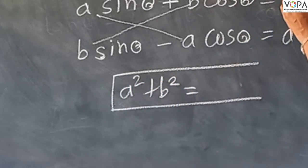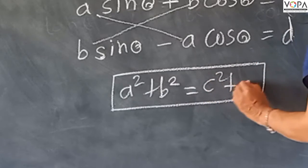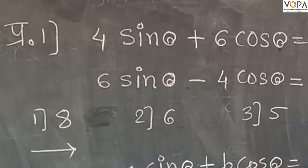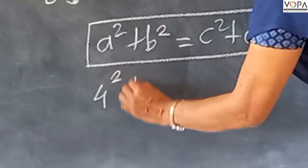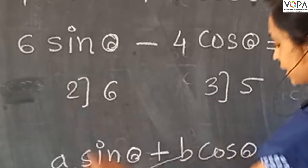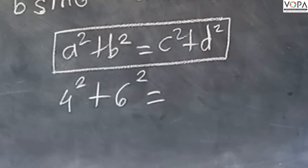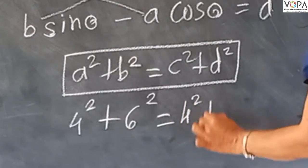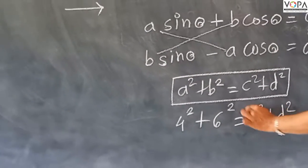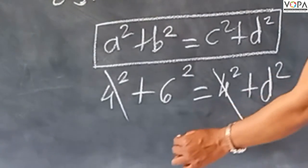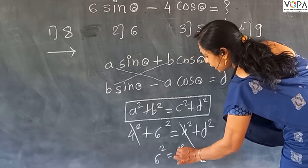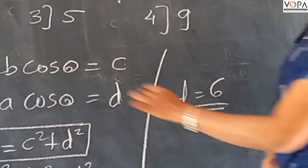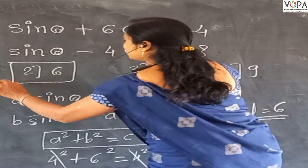We will go back to the last term: c squared plus b squared. We will go back to the example: 4 squared plus 6 squared — this is 6 squared. Equal to c and d. So 4 squared plus 6 squared equal to b squared, and 6 squared plus option c, option number 2.